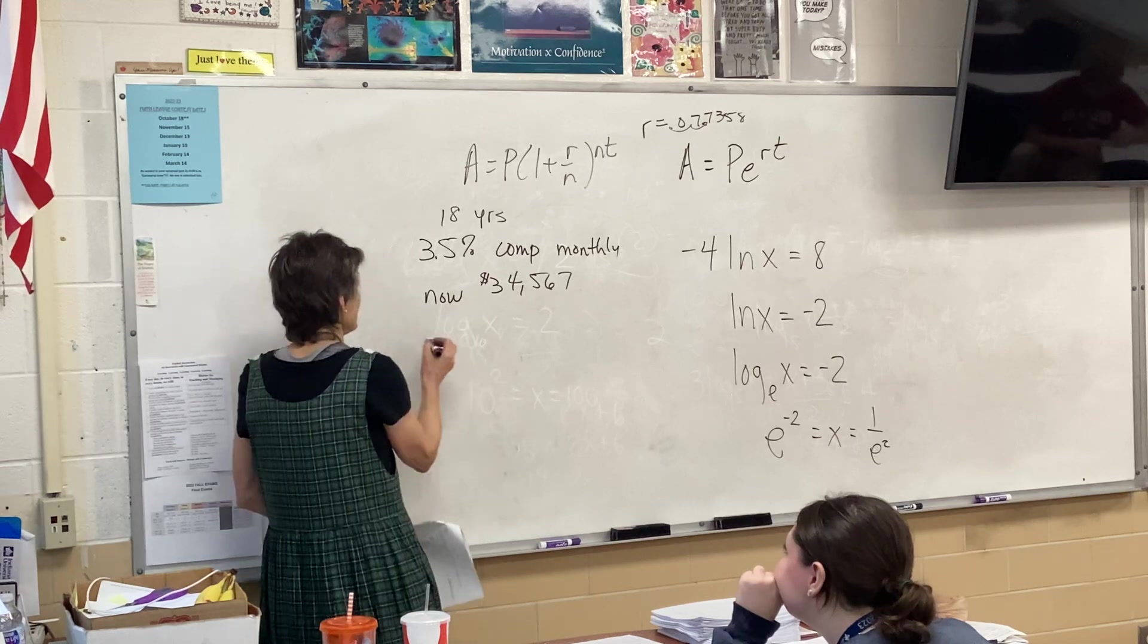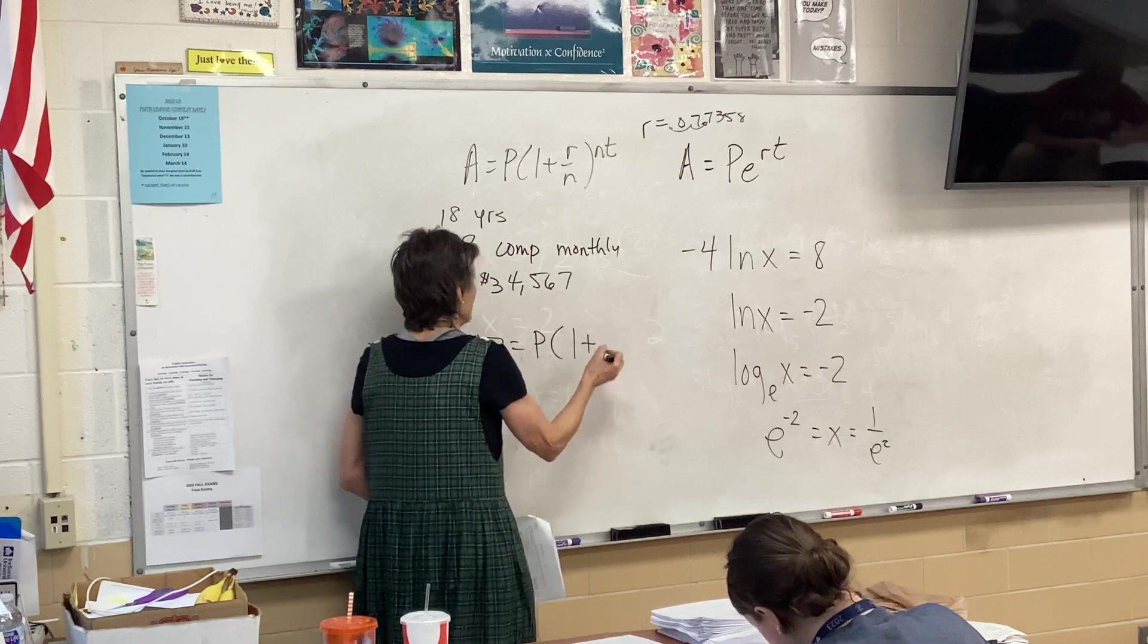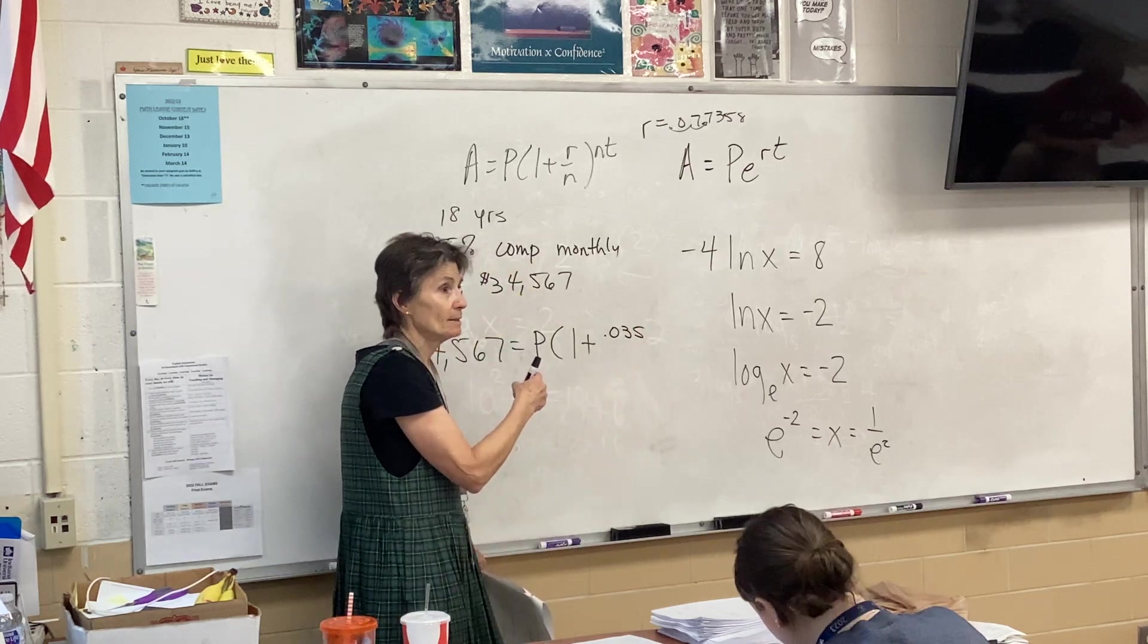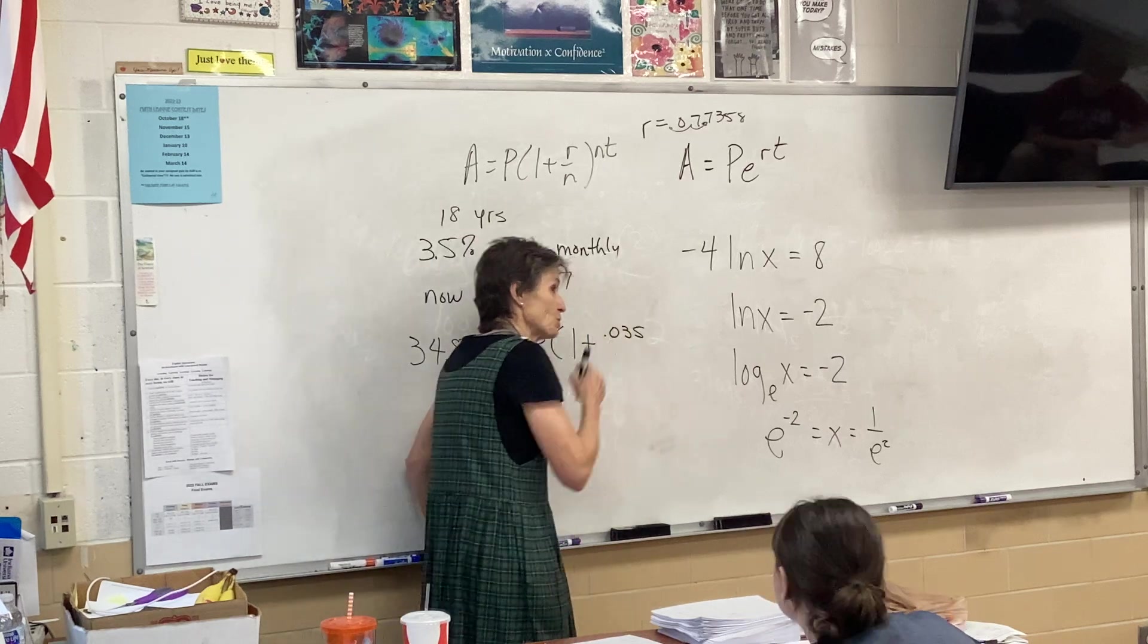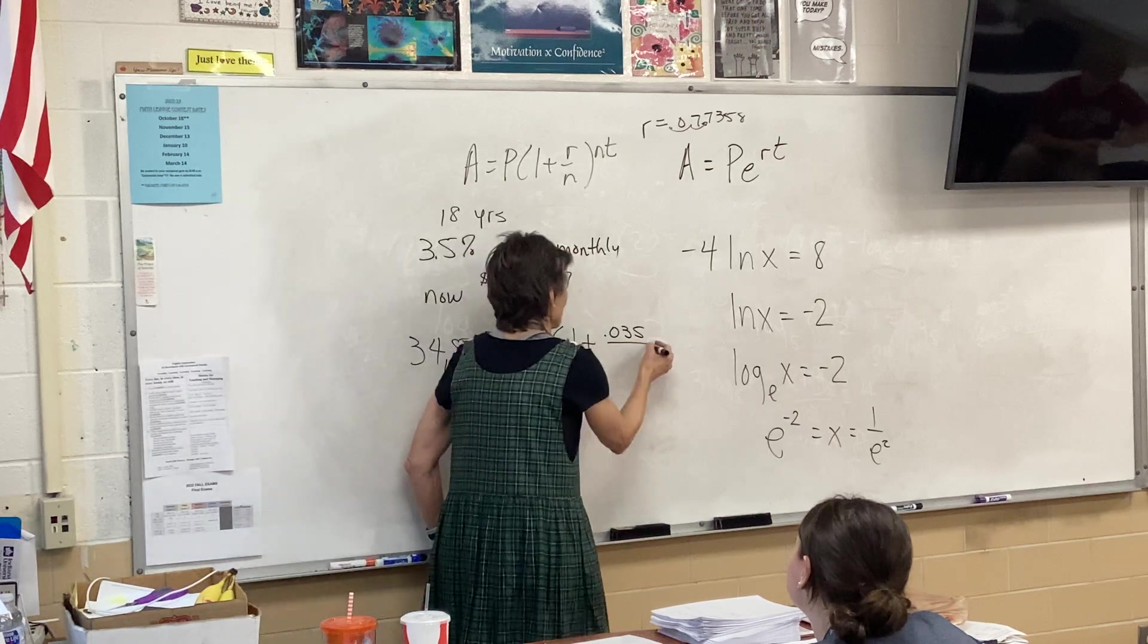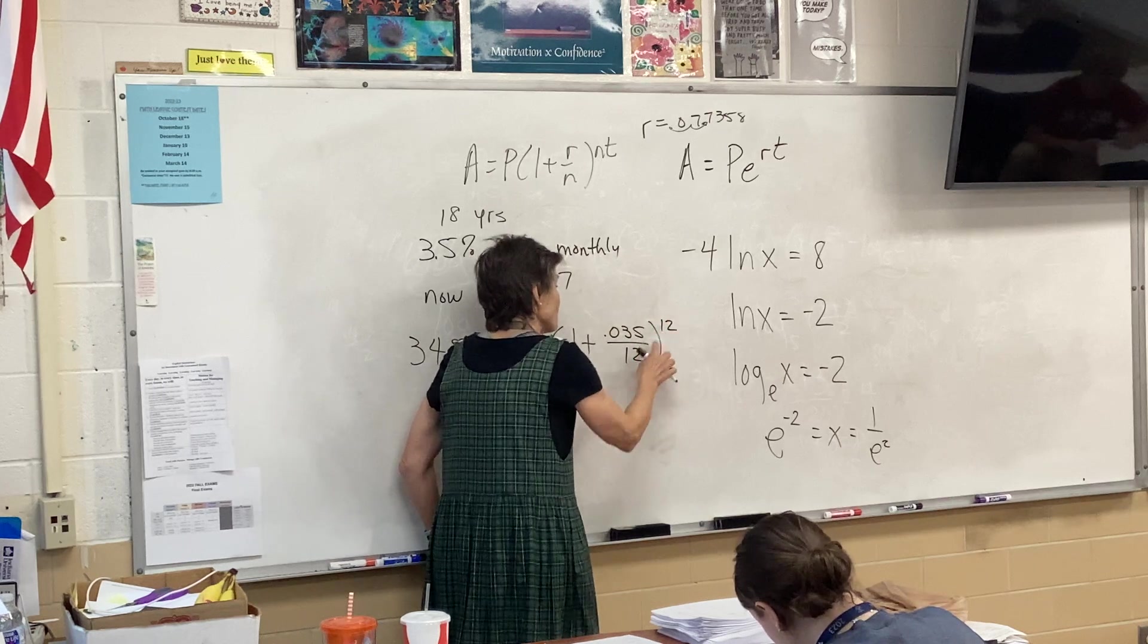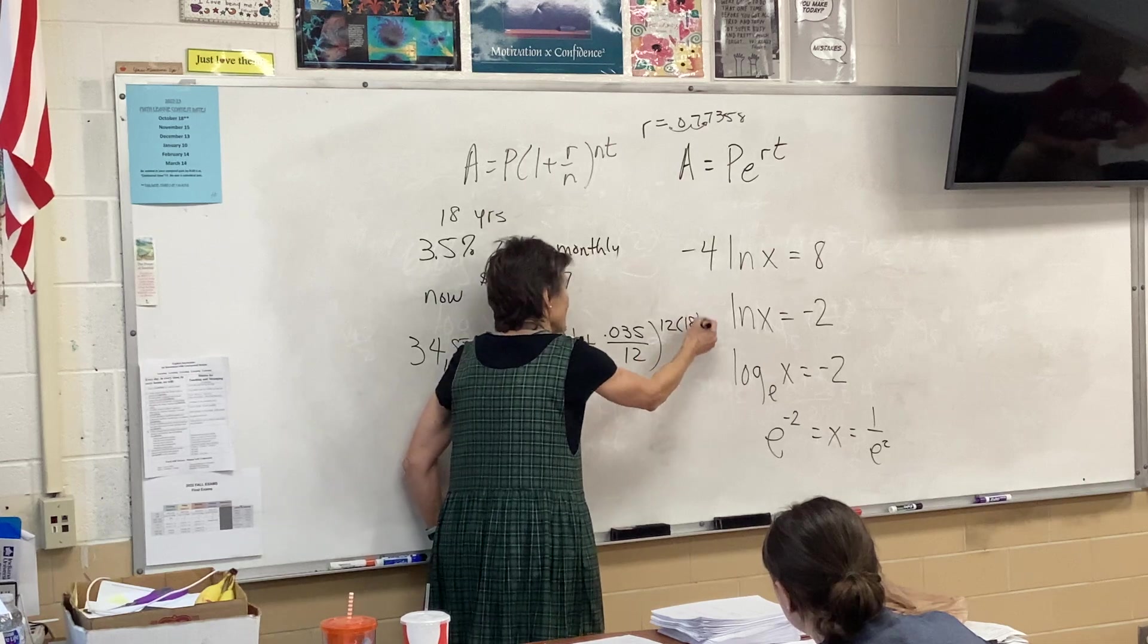That's my unknown. I know I'm ending with $34,567. I don't know B. My interest rate is 0.035. Some of you are still messing that up. Never put the percent into the equation. You always have to make it a decimal. What's my n? 12, because I am compounding monthly. And it goes both places, just like the formula says, and times 18.